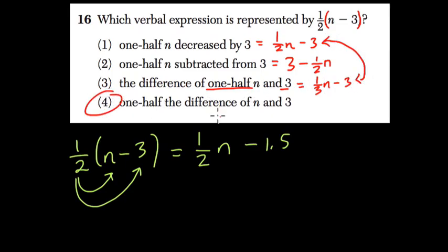So last 4 has to be our answer, and that makes sense if you read it. They write 1 half the difference of n and 3. That means we're finding the difference of n and 3, and taking 1 half of that difference, multiplying of. That's the key word there that helps me realize that 4 is correct.